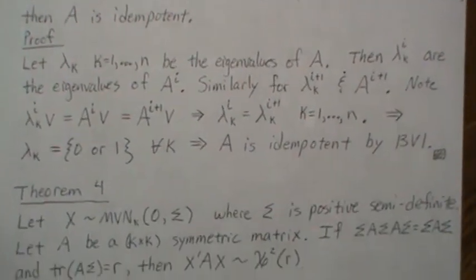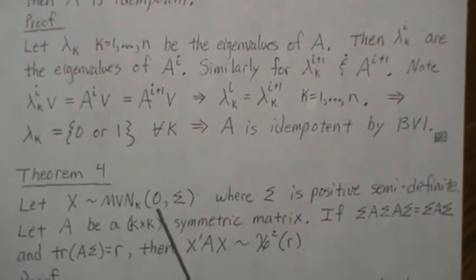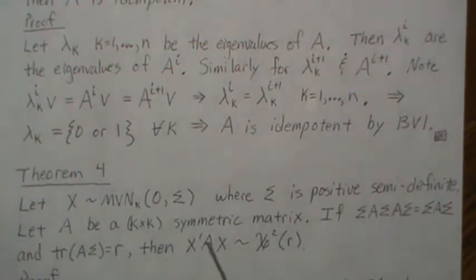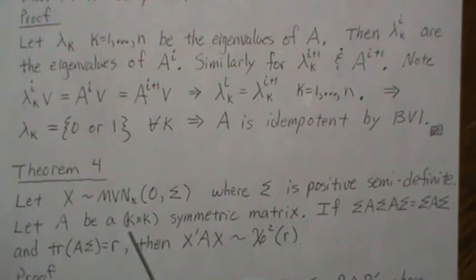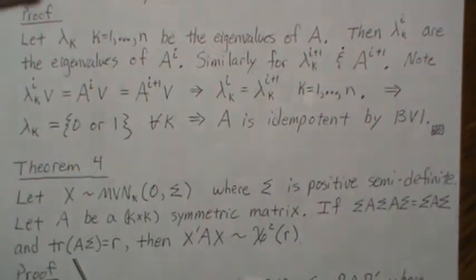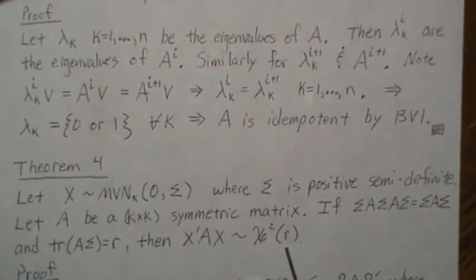Now let's jump into Theorem 4. Let x be multivariate normal(0, sigma) where sigma is a positive semi-definite matrix. Let A be a k-by-k symmetric matrix. If the relationship sigma*A*sigma = sigma holds and the trace of A*sigma equals r, then the quadratic form x'Ax is a central chi-squared with r degrees of freedom.